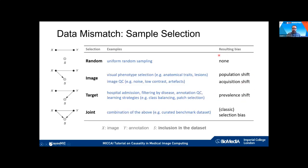We can also do selection based on the target variable — oversampling or undersampling certain classes — which produces a bias similar to prevalence shift. If we select on both inputs and outputs we have classical selection bias, related to Berkson's paradox. Selecting on a collider — where two arrows come into the selection variable — introduces spurious correlations that cannot be corrected without additional measurements to block that path.